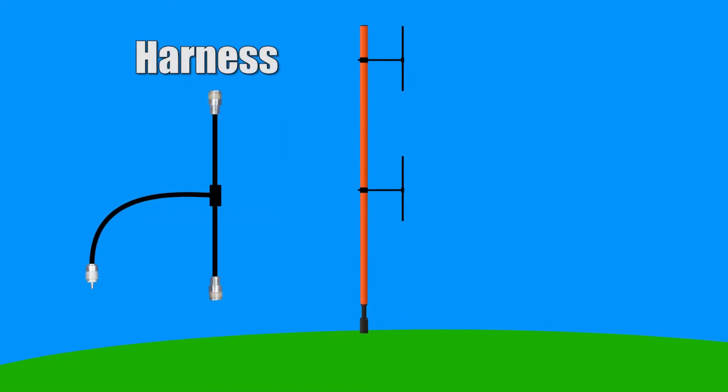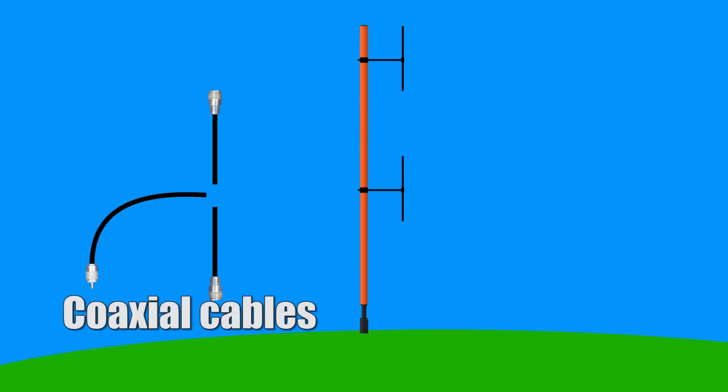The parts you will need are 2 antennas, a pole at least 4 times the length of the antenna, and the most important part is what is called a harness. This is essentially a few pieces of coaxial cable joined together.